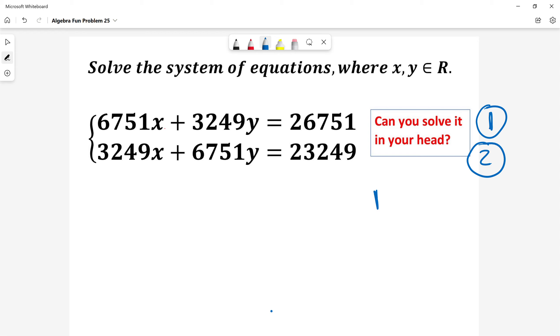If I add sides of those equations, I will do 1 plus 2, then I will get 10,000x plus 10,000y, and this will be equal to 50,000.